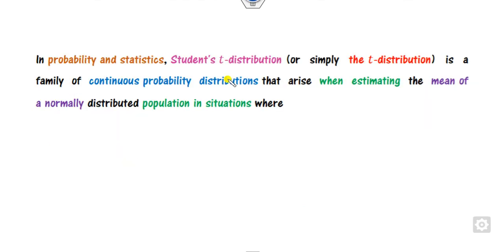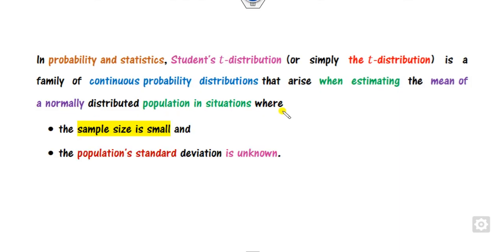What is the student T-distribution? It is also called the T-distribution, which is a class of continuous probability distributions. It arises when your target is to estimate the mean of a normally distributed population, under the condition when the sample size is small — that is, whenever the sample size is less than 30.